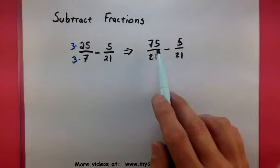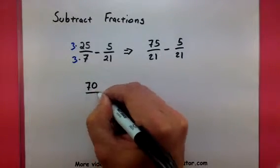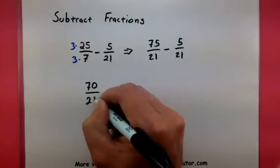Which means I can subtract just the top numbers. So 75 minus 5 is 70 all over 21.